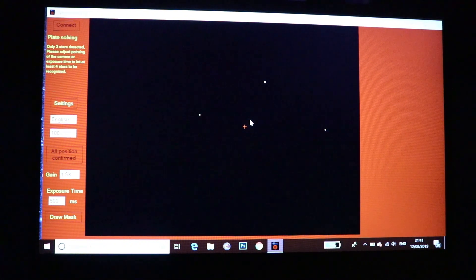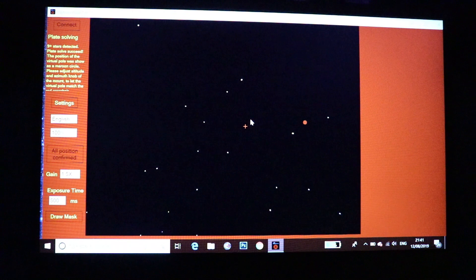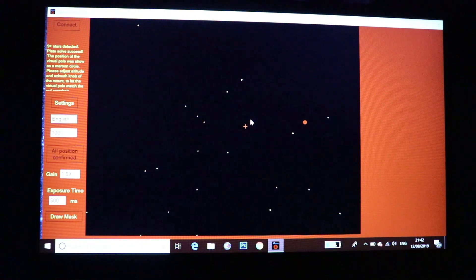So I'm just going to put it back to its home position. I'm then going to adjust the azimuth and the latitude bolts just to get that cross and that circle to line up.